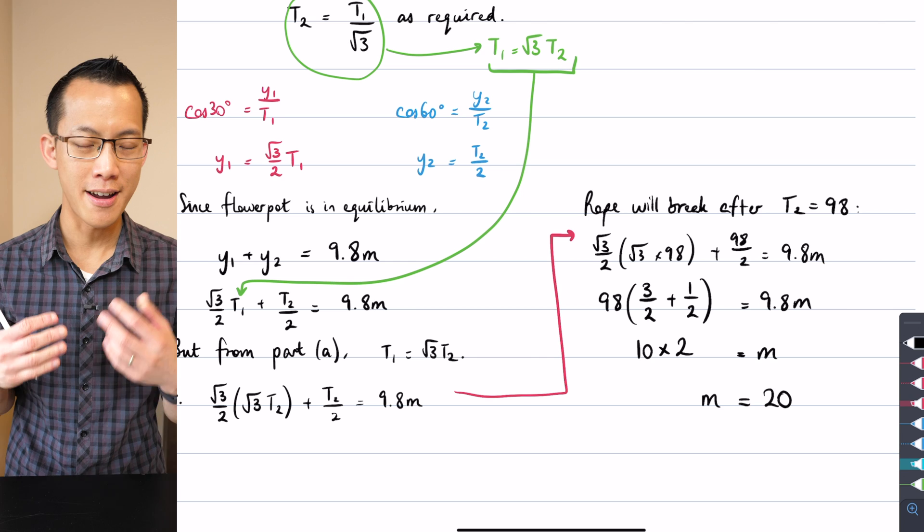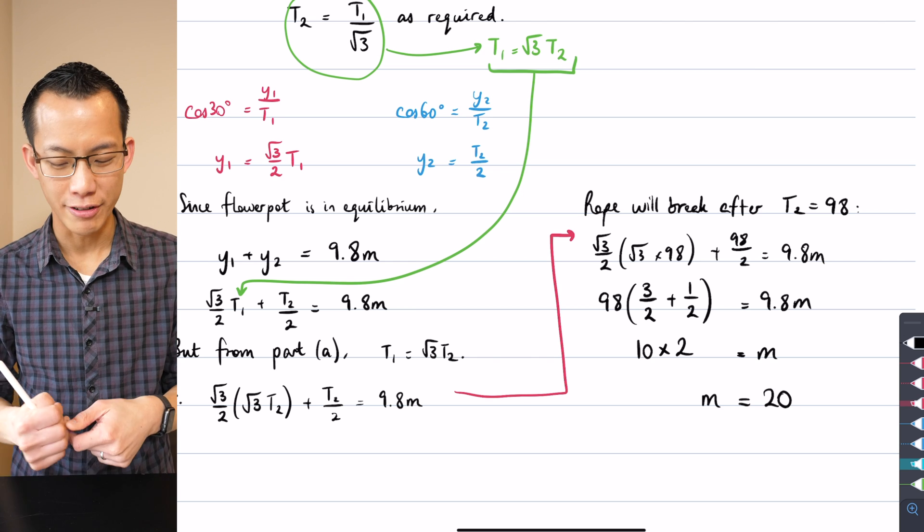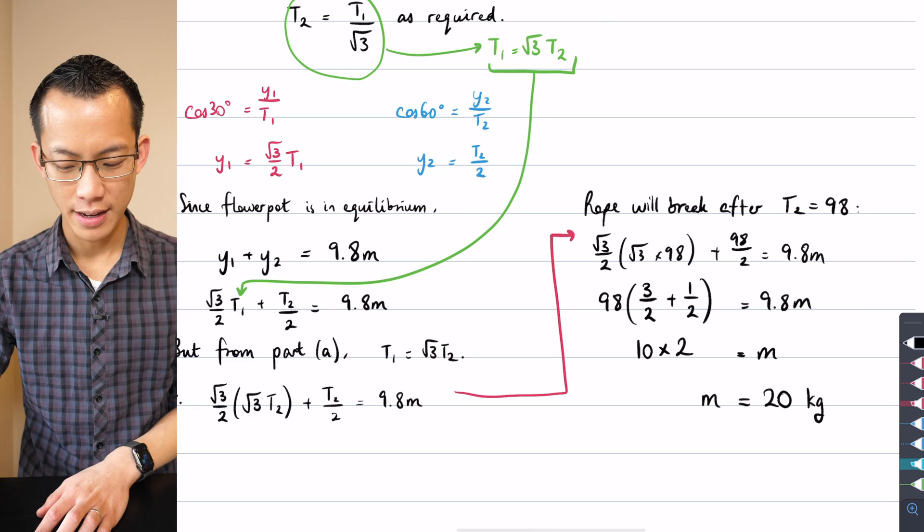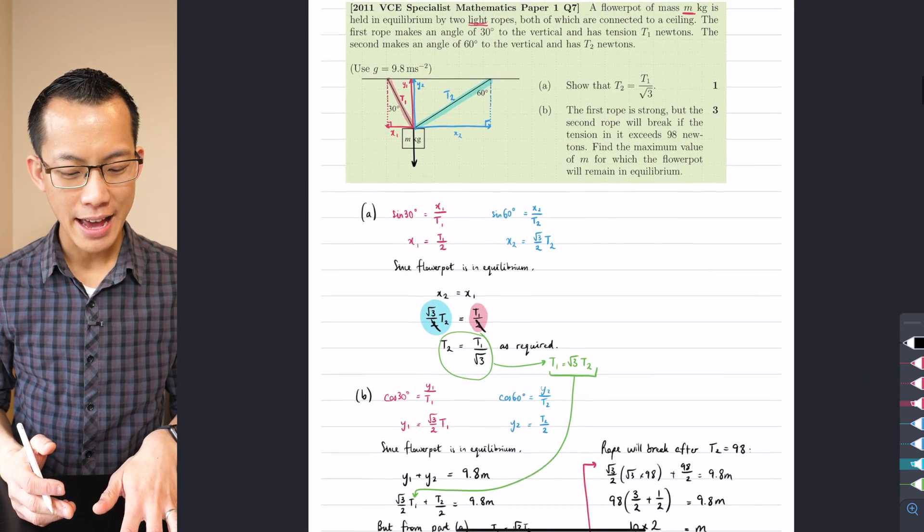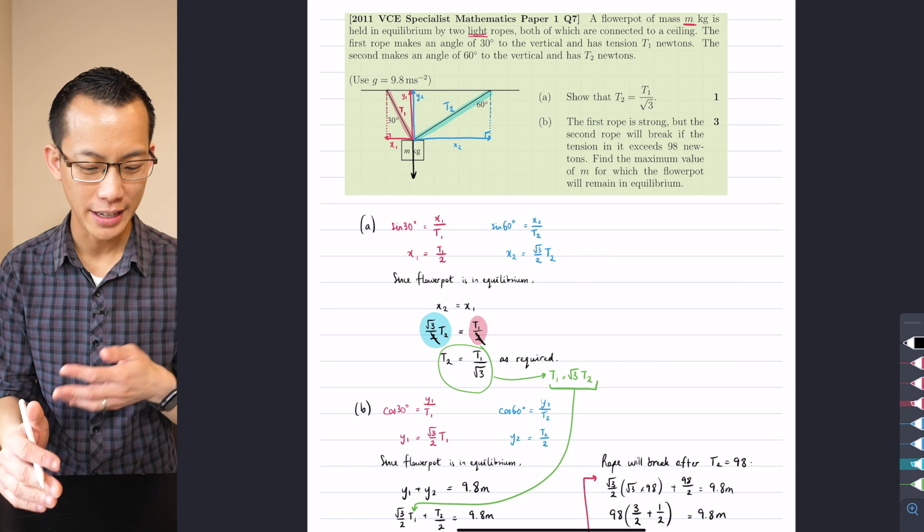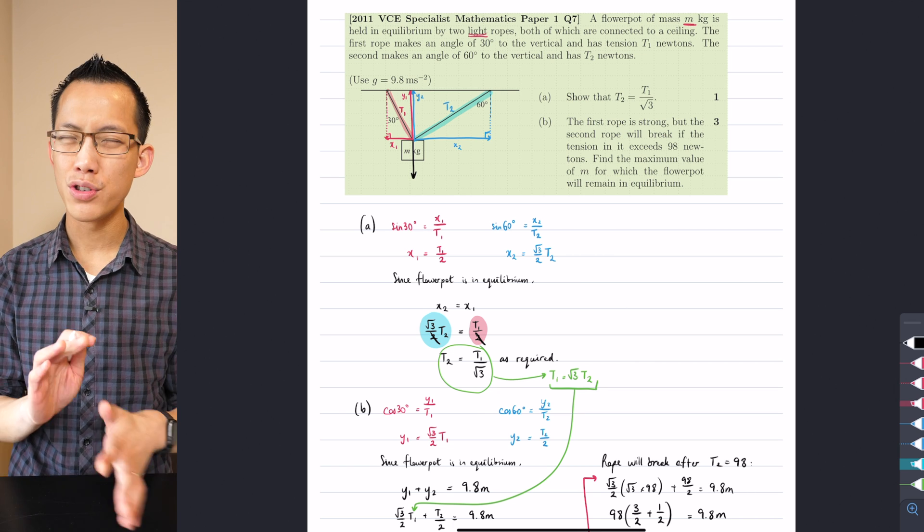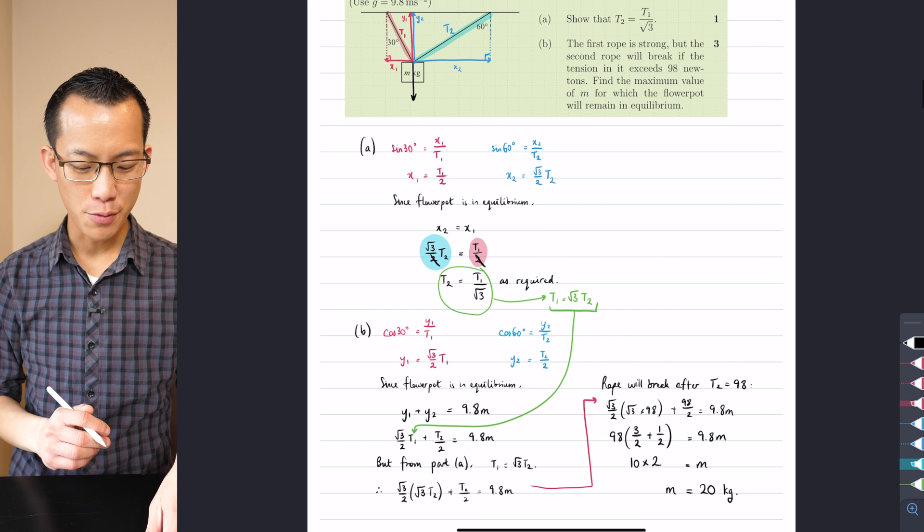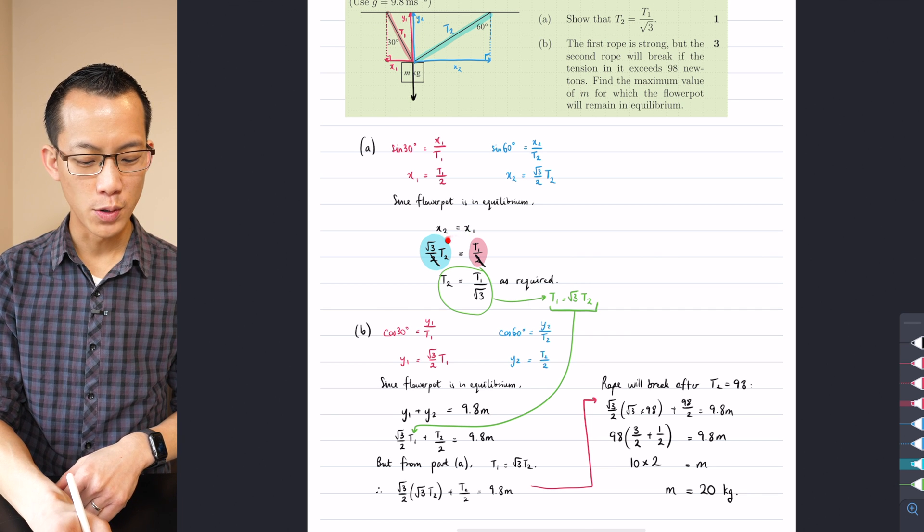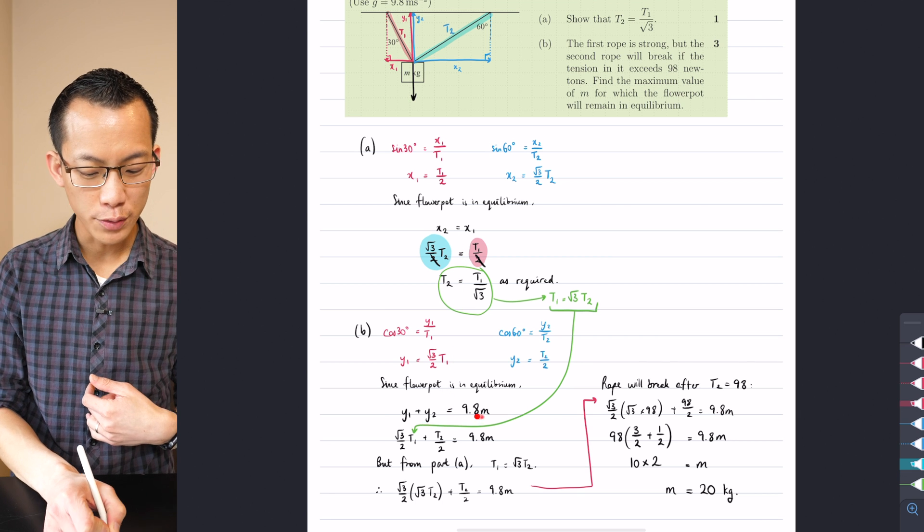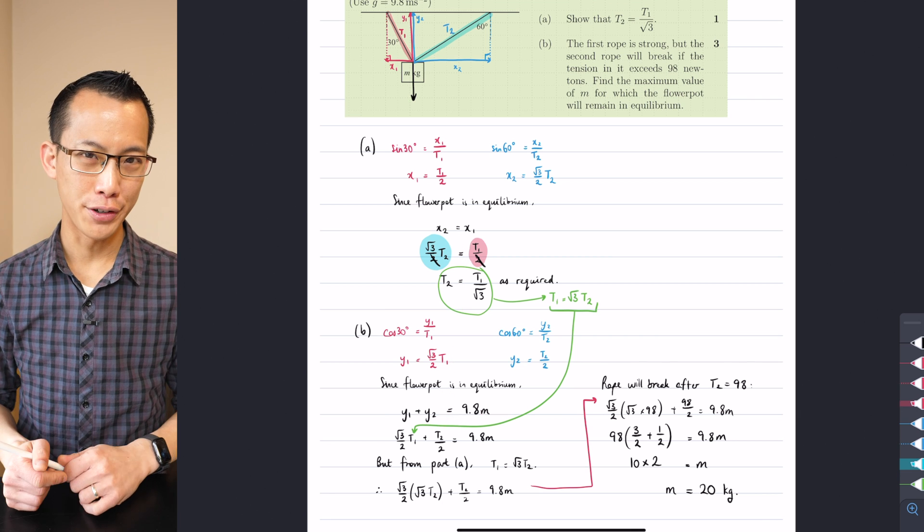And of course, newtons are a unit which include kilograms in them, so actually that mass is 20 kilograms. So have a think about how we went through that. I had to make sure I used my diagram effectively, resolve my forces, use some trigonometry, and then I wanted to make sure I combined everything - look at the horizontal forces and how they balance, look at the vertical forces and how they balance, and then off you go.